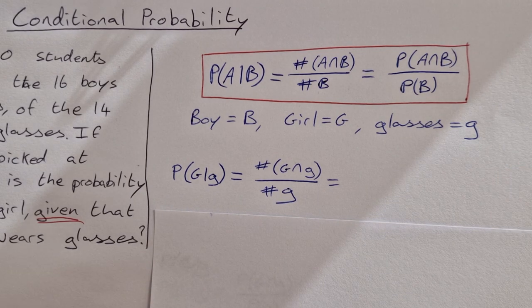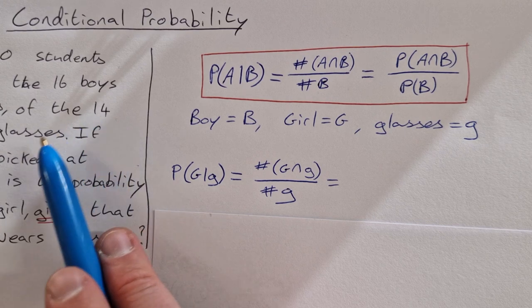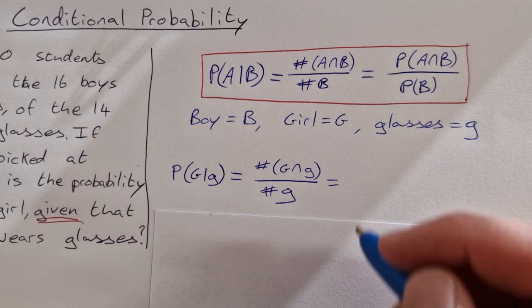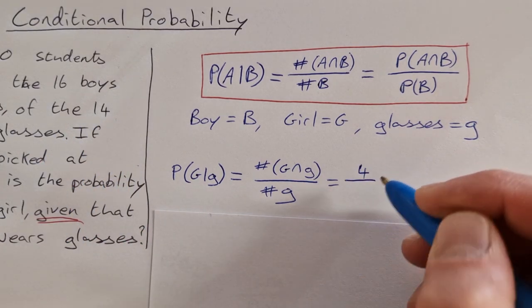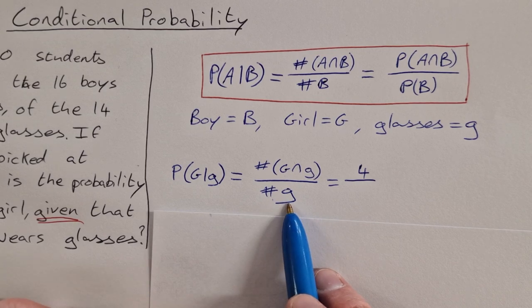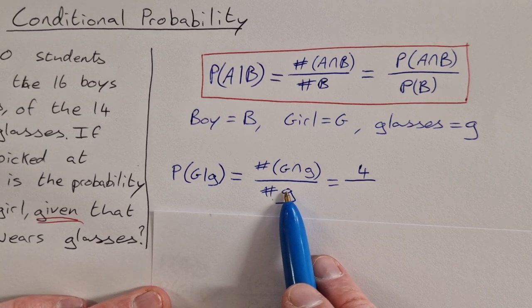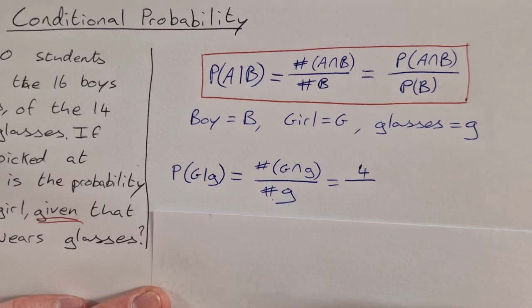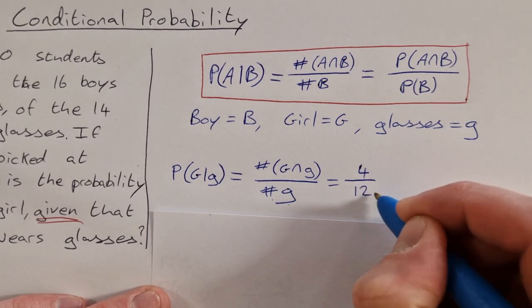Well if you look at the question, there are 14 girls, 4 of them wear glasses, so it's 4. And over the cardinal number of g, that's the number of students who wear glasses in total. That's 8 boys and 4 girls that wear glasses, so it's 4 over 12.